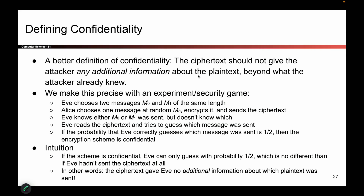The new definition reads like this: the attacker should not be able to learn any additional information about the plaintext beyond what they already knew. This accounts for prior knowledge — if you already knew something, it doesn't count. And it says they cannot learn any additional information: if they learn one word, it's no good; if they learn half of the message, it's not secure. They have to be unable to learn any additional information. That's the definition we're going to use.